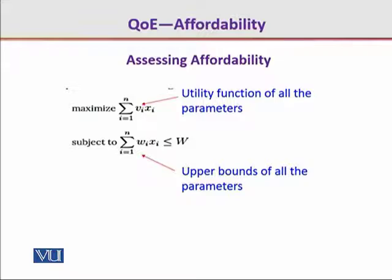The relationship between utility and affordability can be represented in the form of an integer linear program, which is a constraint problem. If we want to maximize the utility functions we have just seen, we must define them as parameters, and their weighted sum would give us the utility drawn from the whole network. We want to maximize that, but at the same time, we have to respect the constraints which are put in by the affordability. All these parameters would be limited in terms of their affordability individually, so with their weighted representation, if we sum them all together, we will get the upper bound of affordability, which has to stay below what the users or the network providers would support.